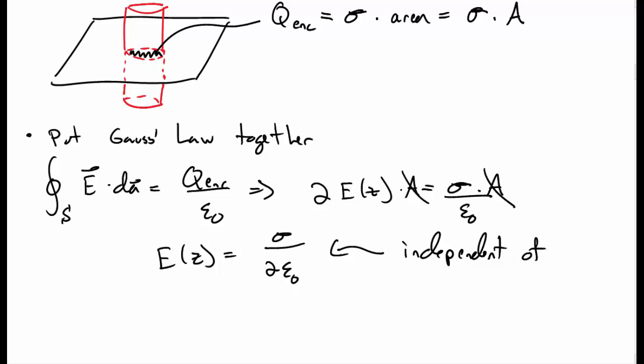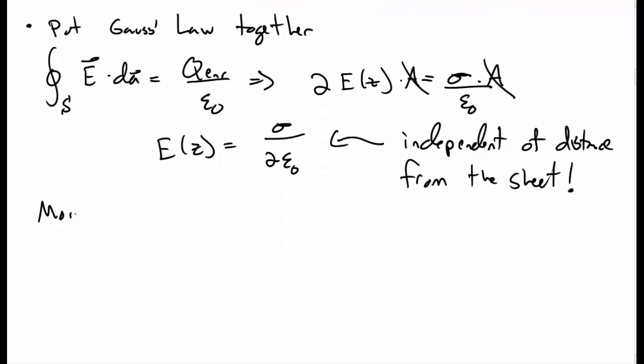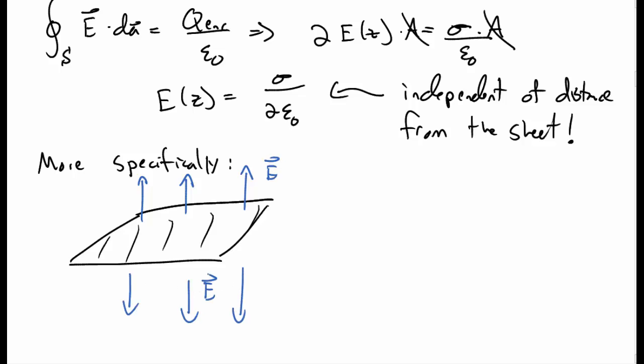And notice that this is actually independent of the distance, Z, from the plane. And that's actually a really important result. So for an infinite sheet, the electric field doesn't depend on how far away you are from the plane. We can be a little bit more precise. The electric field points away from the plane, above and below. And so it points in opposite directions depending on whether you're above or below the plane.